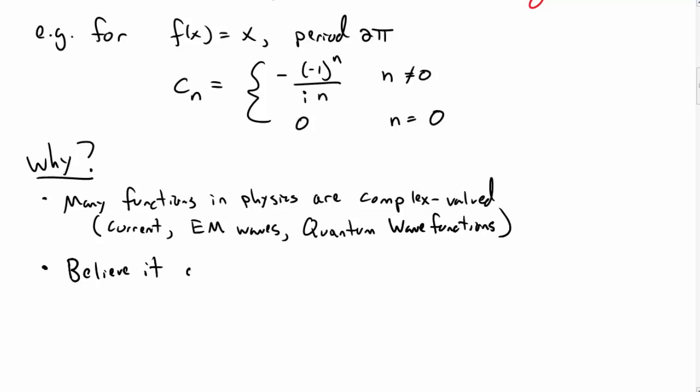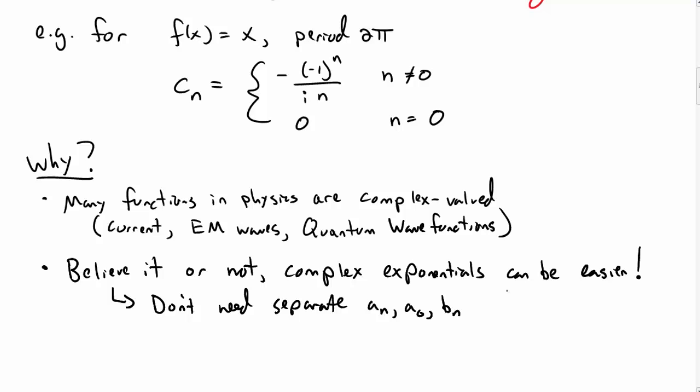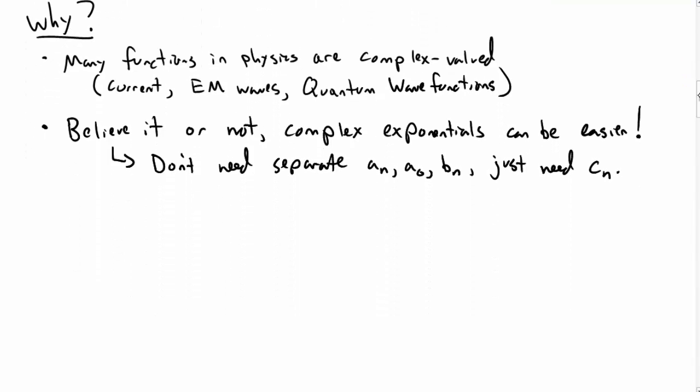And quantum wave functions are necessarily complex. Another reason is, believe it or not, it turns out that complex exponentials can actually be easier to work with. Why is this? Well, one reason is that you don't really need to separate the a_n, the a₀, the b_n. Compute all these different integrals. All you need is just one set of coefficients of the c_n's.